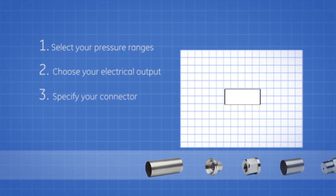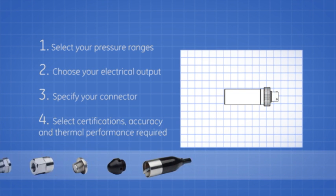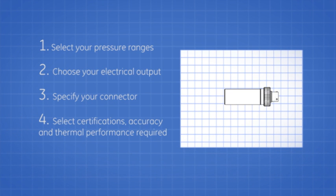Using the configurator is simple. There are five key stages: 1. Select your pressure ranges. 2. Choose your electrical output. 3. Specify your connector. 4. Select certifications, accuracy and thermal performance required.